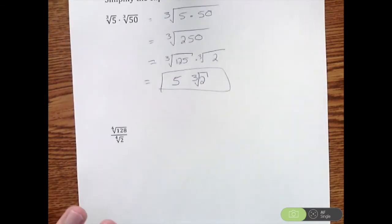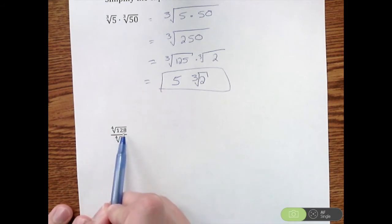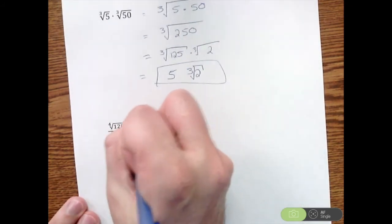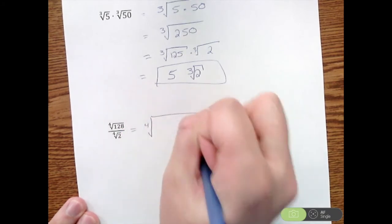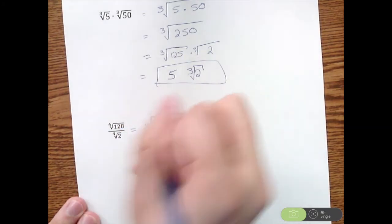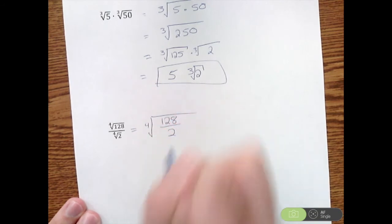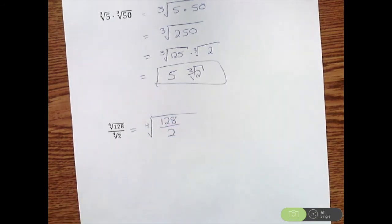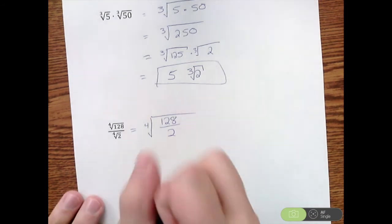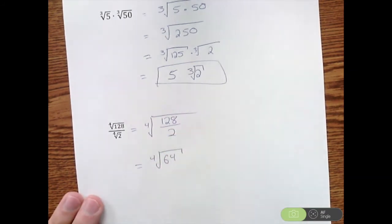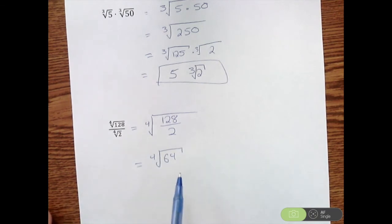Next problem: I have the fourth root of 128 divided by the fourth root of 2. Same idea with properties of radicals—since I'm dividing two fourth roots, I can divide the insides: 128 divided by 2 equals 64. So I have the fourth root of 64, but I want to check if this is fully simplified.